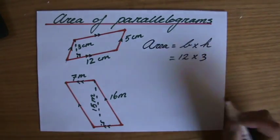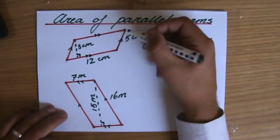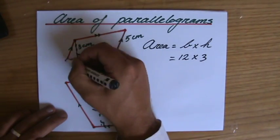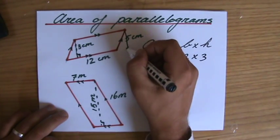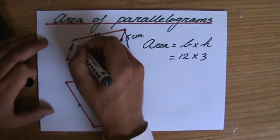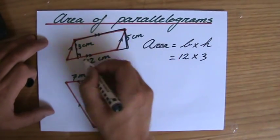In this case, will be 12 times 3. I don't really care about this slanted height. If I would cut this part off and glue that on this side—and that's what I show you in a different video—I actually have a rectangle.